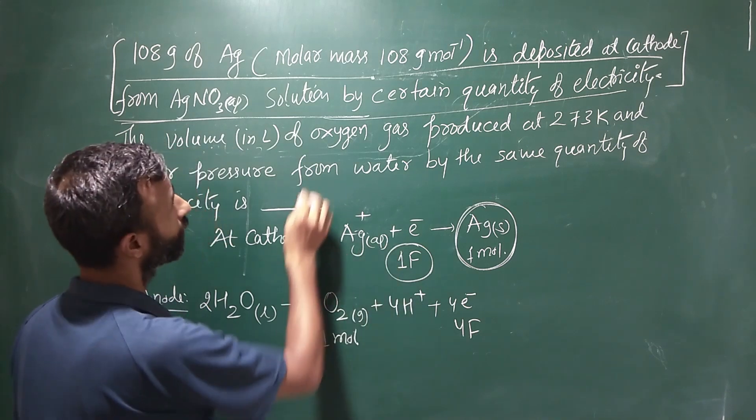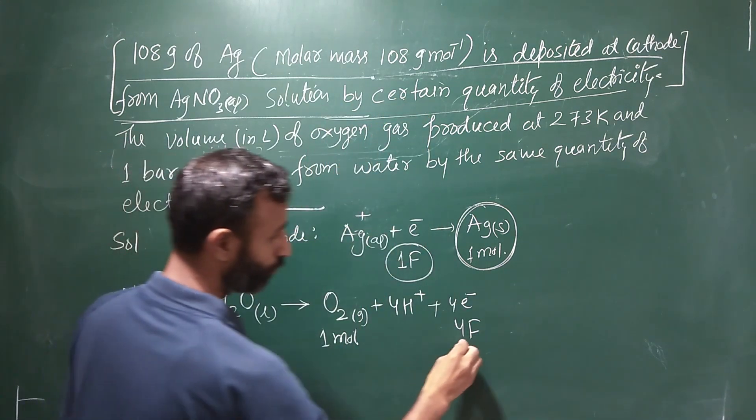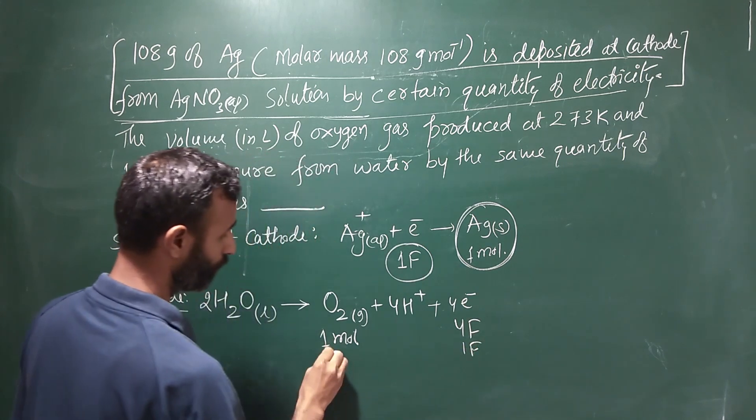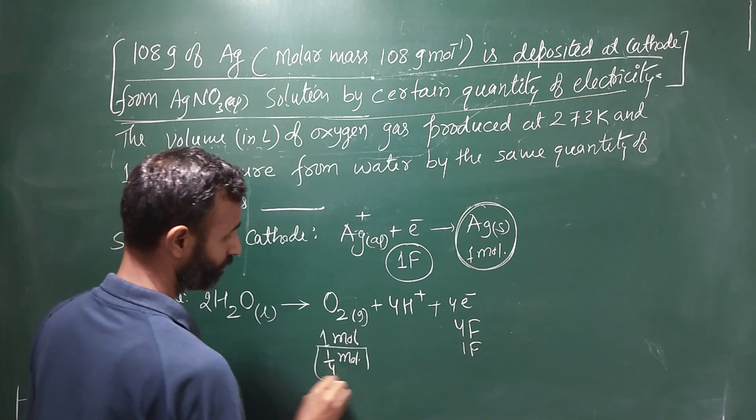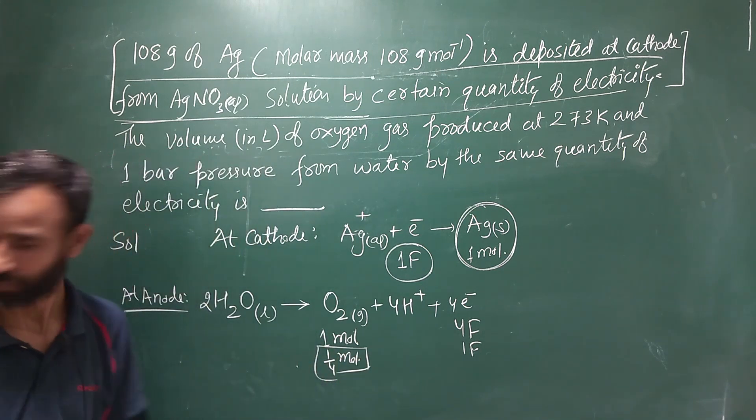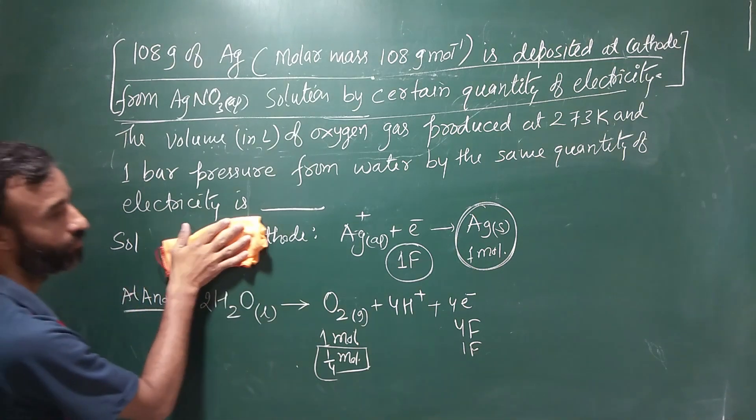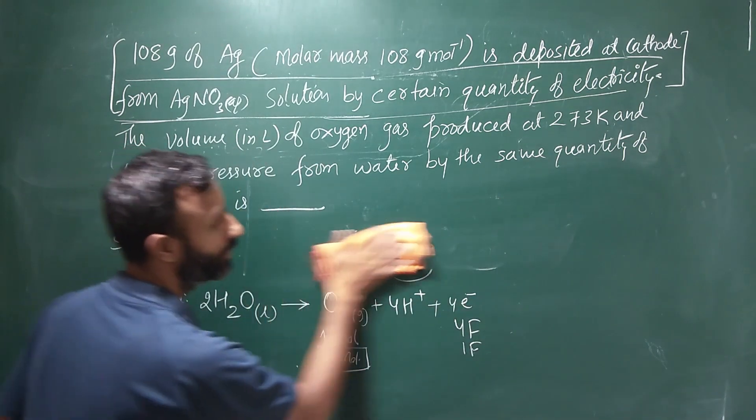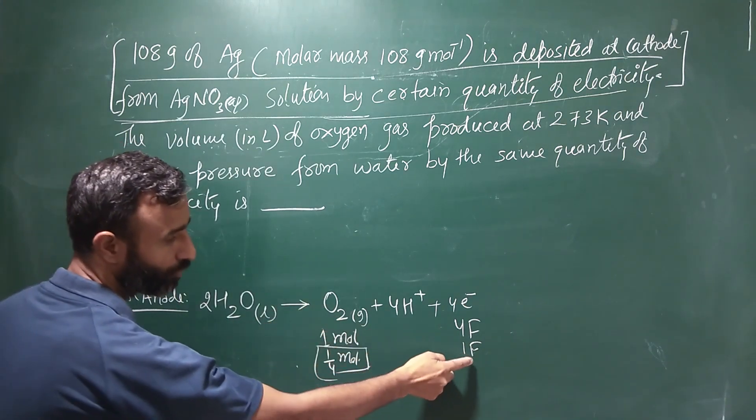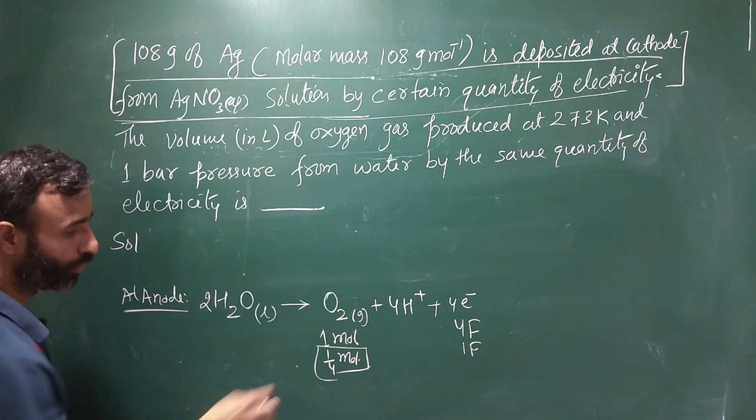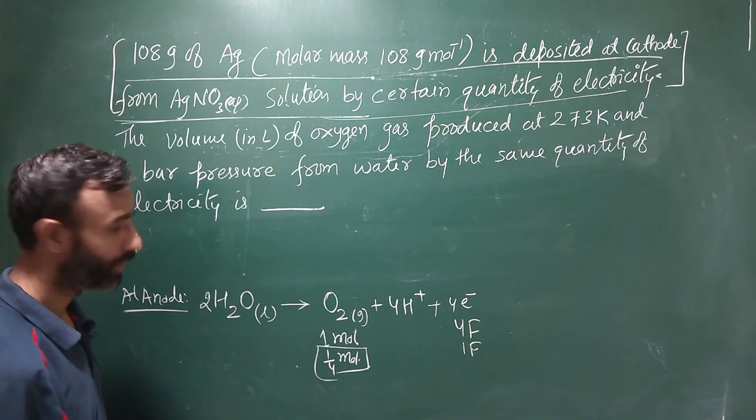But you know, quantity of electricity is 1 faraday. If we pass 1 faraday, we get 1 by 4 mole of O2 gas. This is clear that if we pass O2 gas by passing 1 faraday of electricity, 1 by 4 mole of oxygen.